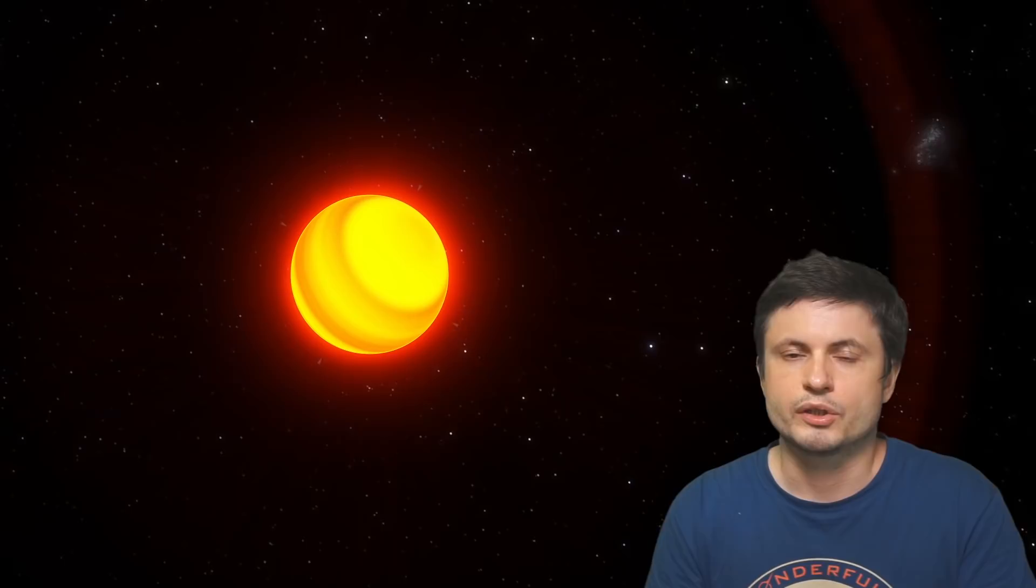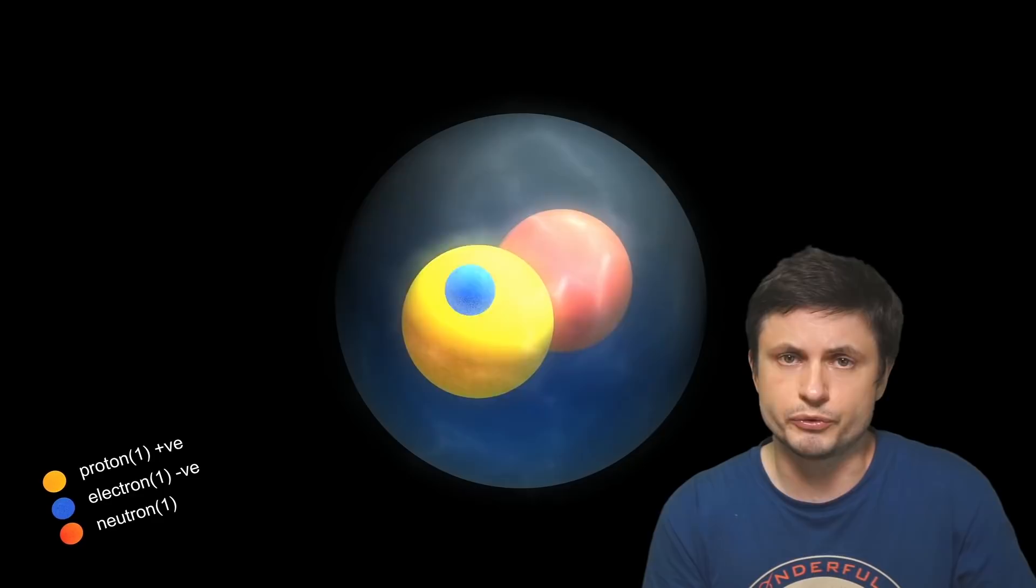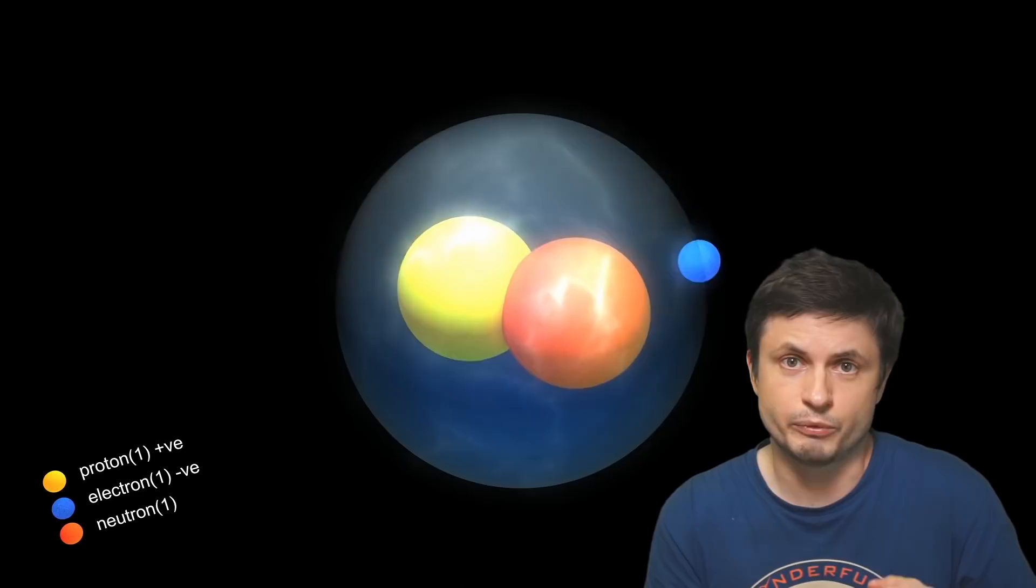On top of this, depending on the mass, they actually may have different reactions on the inside. So for example, theoretically it's believed that approximately 13 masses of Jupiter is required to start the reaction of deuterium, specifically deuterium fusion. And that's when the heavier isotopes of hydrogen start to essentially fuse producing energy. But because there's much less deuterium inside the typical object than regular hydrogen, it obviously does not produce a lot of energy.